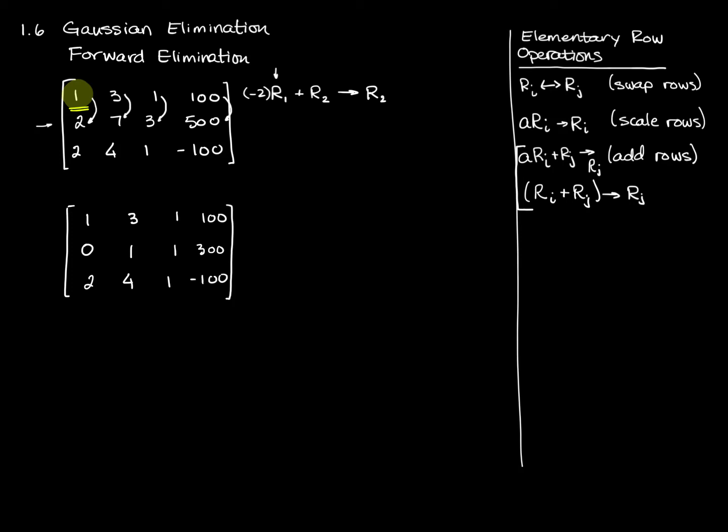And then doing one operation at a time, my third row does not change. But because I also have a two here, and I want zeros below everything except for the pivot in this column, I'm going to do the same thing again. I'm going to take negative two times row one, and this time I'm going to add it to row three. And that's going to give me a new row three.